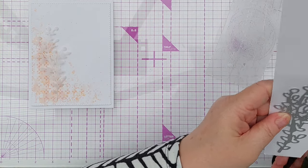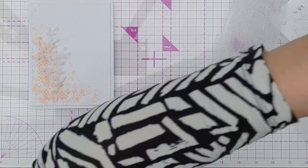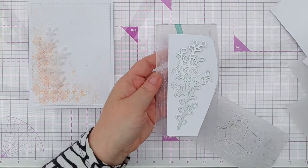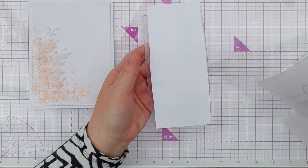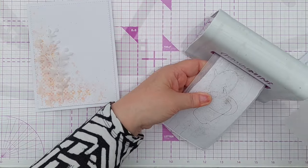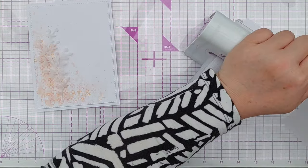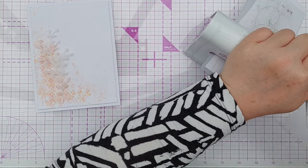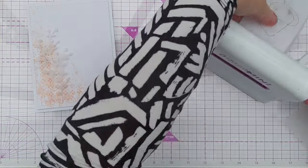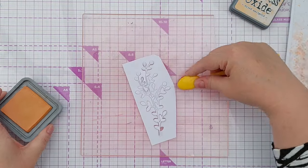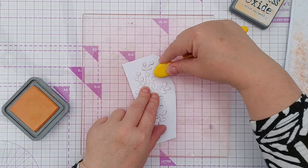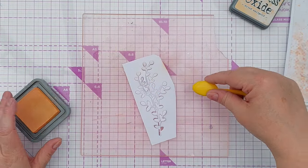To embellish the card I used a new to me branchy leafy die. I first cut it out in vellum and then I cut it out in white cardstock. The white cardstock one I put on my grip mat and added a light blush of dried marigold to it. This just gives it a little bit of dimension and a little bit of color and stops it looking quite so stark on the card.